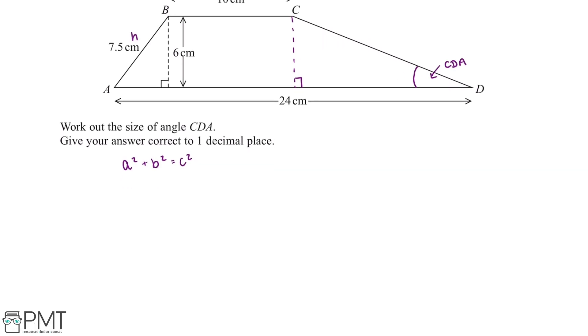So because of this we can rearrange this equation. We can rearrange it to A squared is equal to C squared minus B squared. And we can start substituting in numbers.